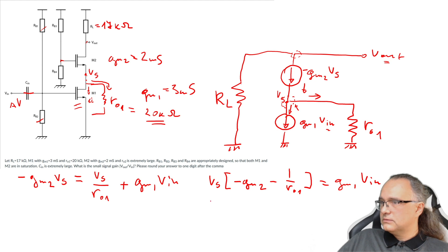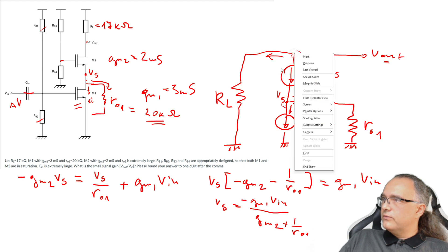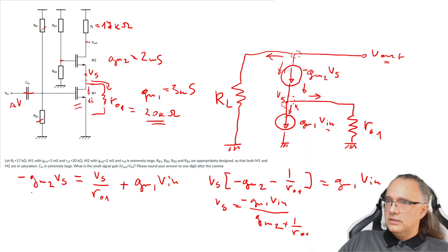Let's write it down Vs. In the bracket it's minus Gm2 minus 1 over Rout1 is equal to Gm1·Vin. Vs is equal to minus Gm1·Vin divided by Gm2 plus 1 over Rout1. Now I have Vs and I need another equation for Vout. So I will write Kirchhoff current law for this node. So this would be then Vout divided by R load minus Gm2·Vs is equal to 0.